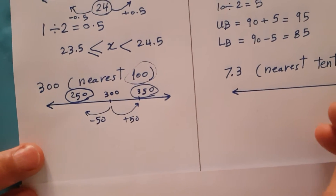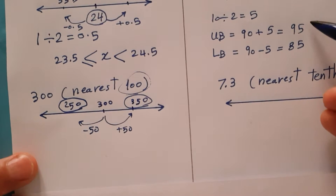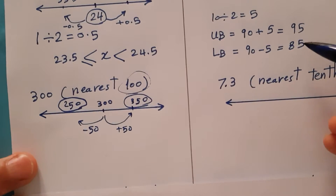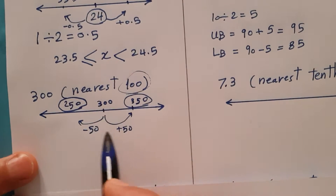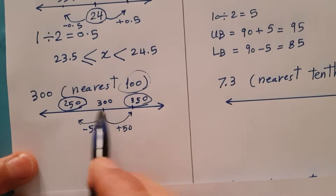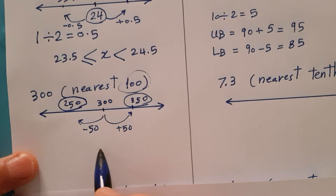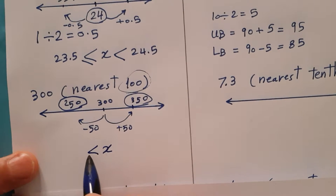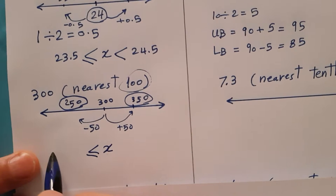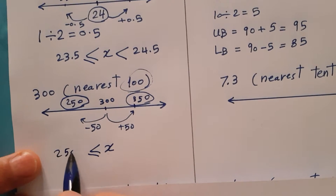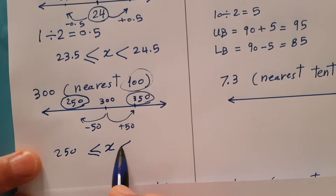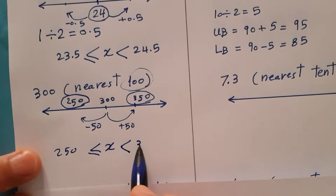You can write it as upper bound and lower bound, or you can write it as an inequality: x ≥ 250 and x < 350.